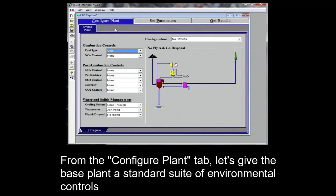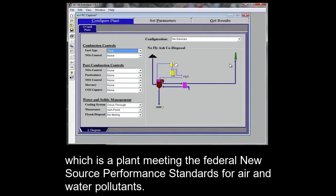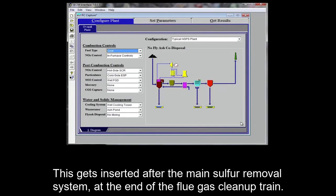From the configure plant tab, let's give the base plant a standard suite of environmental controls by selecting typical NSPS plant for the plant configuration, which is a plant meeting the federal new source performance standards for air and water pollutants. There's currently no standard for CO2 in the U.S., so we'll choose our post-combustion system directly from this menu. We'll start with an amine system as an example.